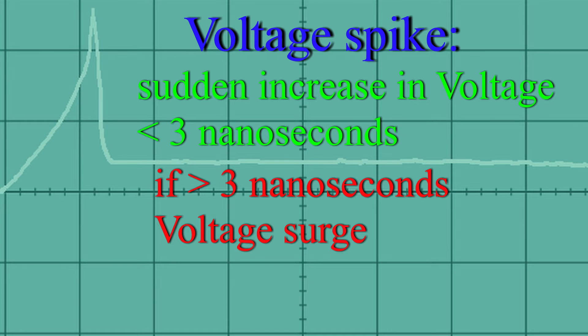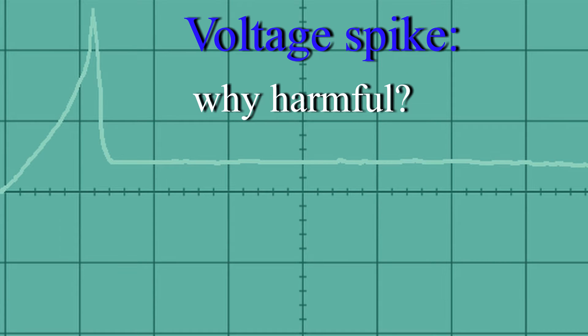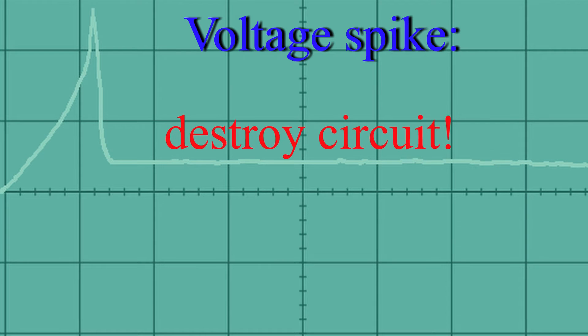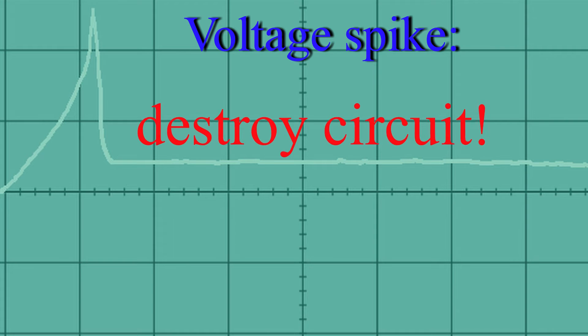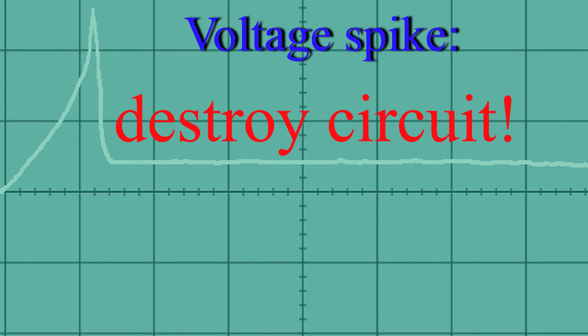So why is that harmful for electronics? Because these sudden increases mostly have a voltage of many hundreds or even thousands of volts. Most electronic components can't handle such a high voltage, even not for some nanoseconds. This will definitely destroy your circuit or electronic components.